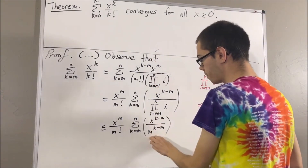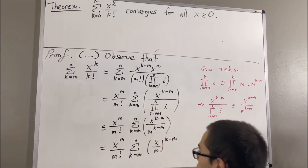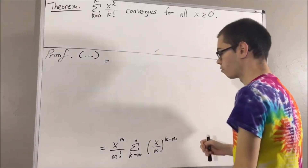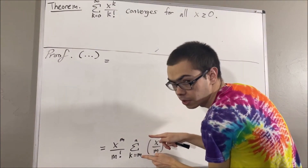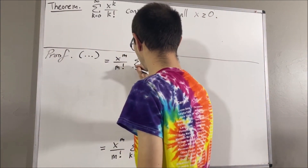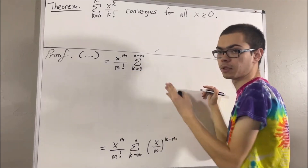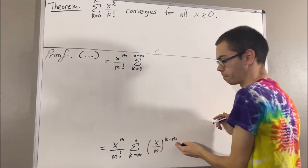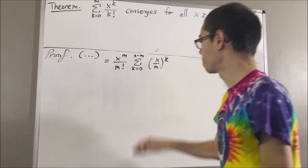We can re-express this as x over m to the power of k minus m. Shifting the index by decreasing both the lower and upper bounds by m, we get the sum from k equals 0 to n minus m of x over m to the power of k. And now we have a geometric series.